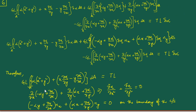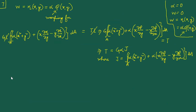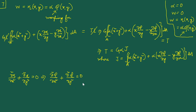Next, we have the governing equation, which is just the Laplacian of kappa. Again, kappa can be represented as alpha·phi, and since alpha is independent of x and y, it comes out of the derivatives. So overall, we end up with ∂²φ/∂x² + ∂²φ/∂y² = 0. That is simply the Laplacian of phi.